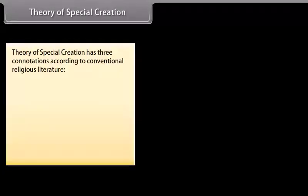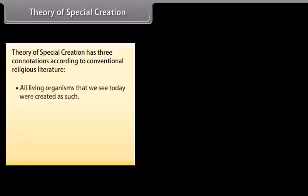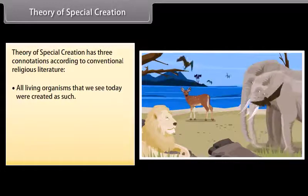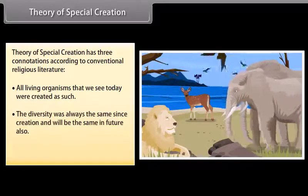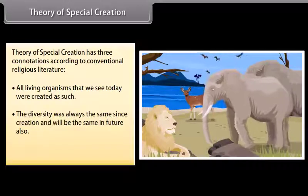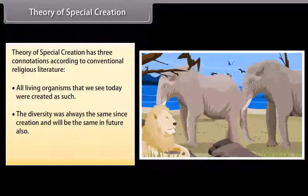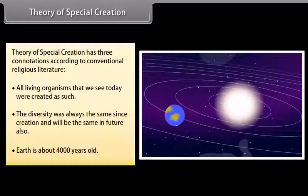Theory of special creation. Theory of special creation has three connotations according to conventional religious literature. All living organisms that we see today were created as such. The diversity was always the same since creation and will be the same in future also. Earth is about 4000 years old.